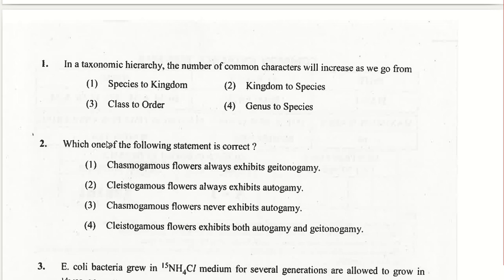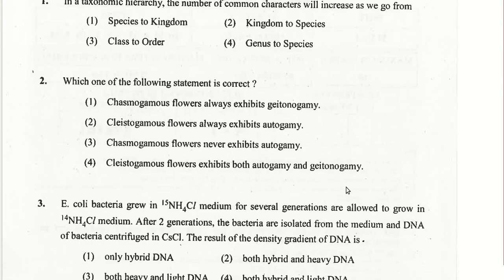Which statement is correct: cleistogamous flowers always exhibit autogamy because they never bloom, and both the androecium and gynoecium mature at the same time. So homogamy in cleistogamous flowers means they always exhibit self-pollination, making the second statement the correct answer.